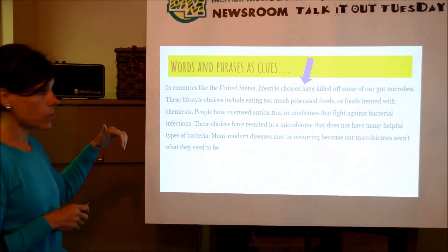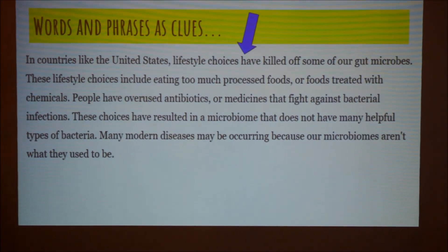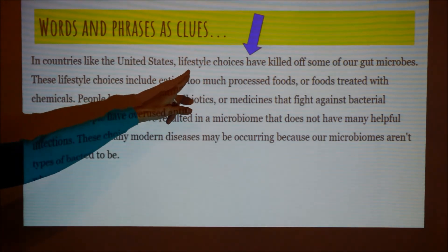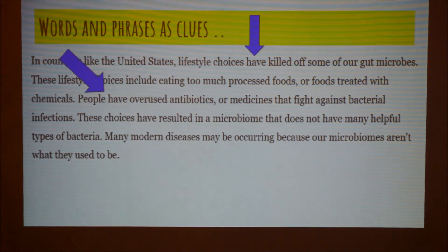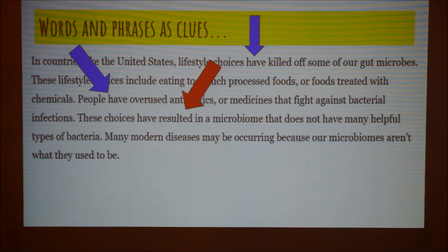'In countries like the United States, lifestyle choices have killed off some of our gut microbes.' Right there, the author is telling us what the effect is. Let's find out what the causes are. 'These lifestyle choices include eating too much processed foods, or foods treated with chemicals. People have overused antibiotics, or medicines that fight against bacterial infections. These choices have resulted in a microbiome that does not have many helpful types of bacteria.'